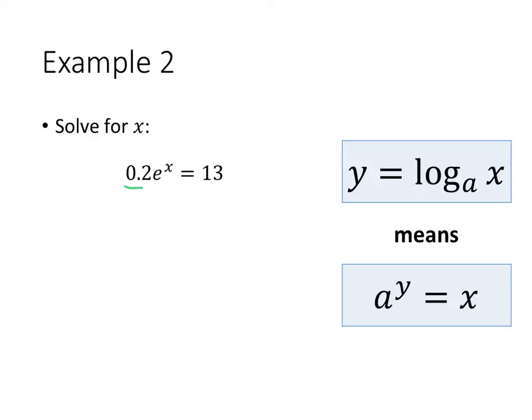Well, what's different is that we have this point 2 in front of my exponential expression. If you remember your order of operations, exponentiation happens before multiplication, which means only the e is being raised to the x power. The point 2 is not part of that exponential expression. So to get rid of that point 2, I'm going to divide both sides of this equation by point 2. I have to do that before I try to convert this to logarithmic form.